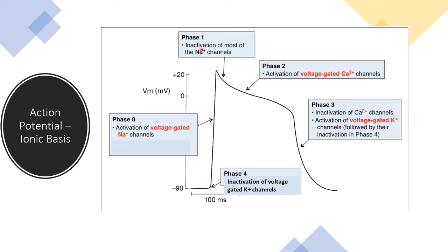The inactivation of sodium channels leads to phase 1, the phase of rapid repolarization, where the membrane potential of the cell goes down. That is followed by phase 2, the plateau phase, where the membrane potential is maintained at almost the same level — there is no rapid increase or decrease. This plateau phase is because of the influx of calcium through the slowly opening voltage-gated calcium channels.